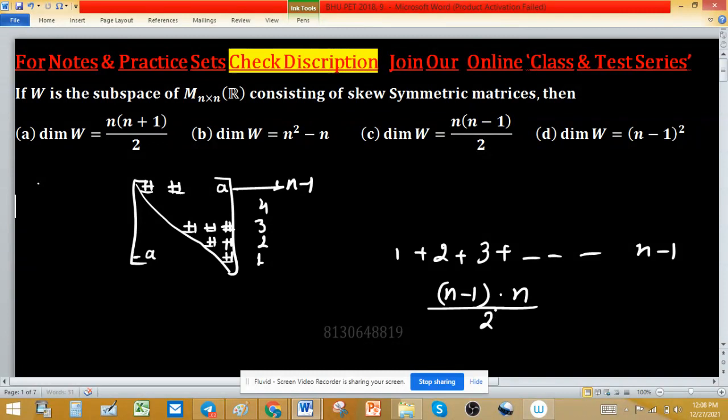We have applied sum of first n natural numbers. So dimension of W is nothing but option found in etc, which is (n minus 1)n divided by 2.